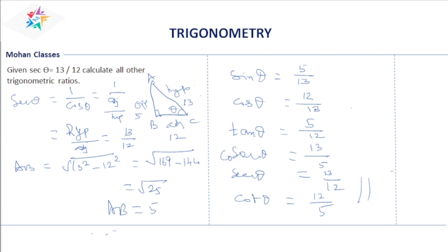This is the way to find all the ratios of a triangle. To find the ratios, you must know the three sides — opposite, adjacent, and hypotenuse — according to the given angle. That's it for today. If you like this video, kindly share it with your friends, don't forget to subscribe, and give a like. Thank you.